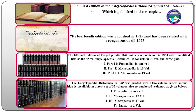Now we discuss the types of encyclopedia in more detail. The first edition of the Encyclopaedia Britannica was published in 1768, and the first edition was available in three volumes. The 14th edition was published in 1929, and the revised edition came in 1973. The 15th edition of the Encyclopaedia Britannica was published in 1974, published in 30 volumes. The first part was Propedia, the second part was Micropedia, and the third part was Macropedia.